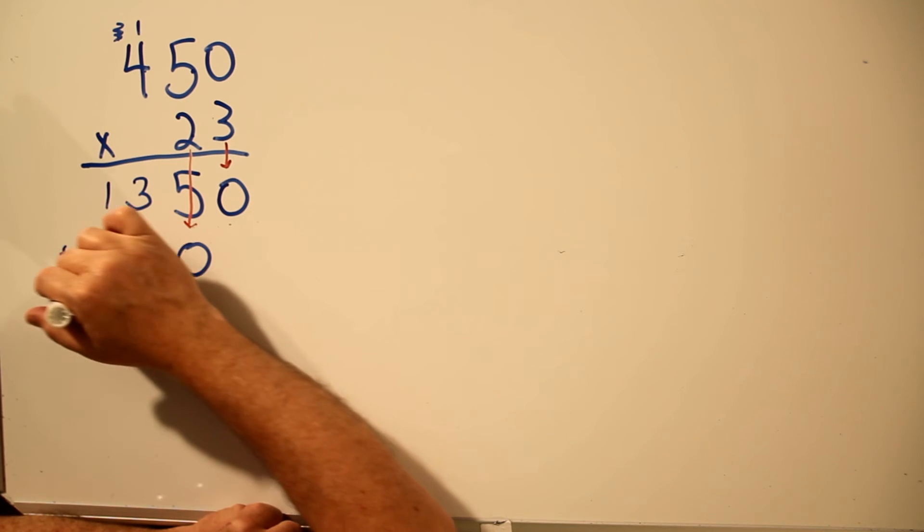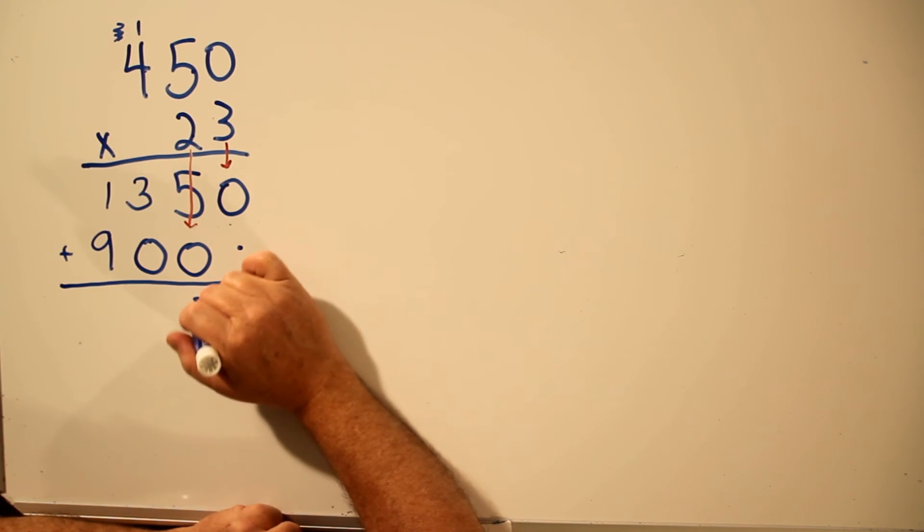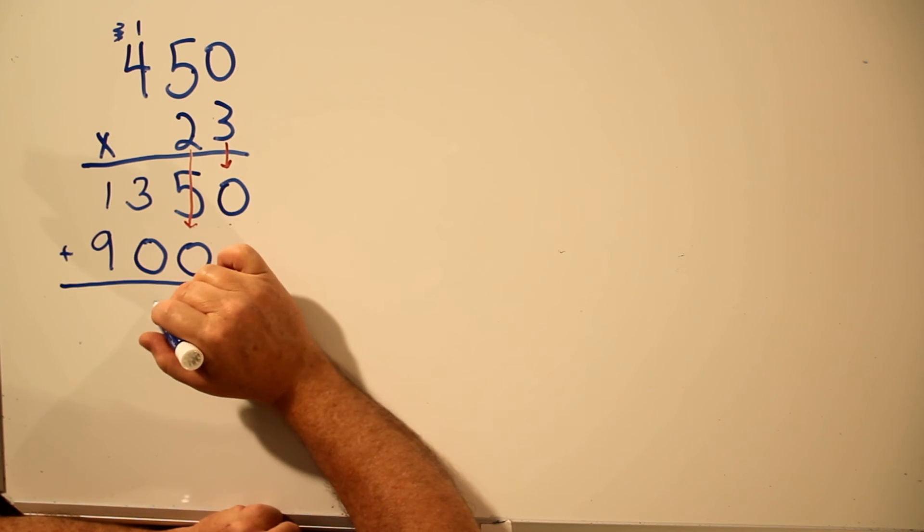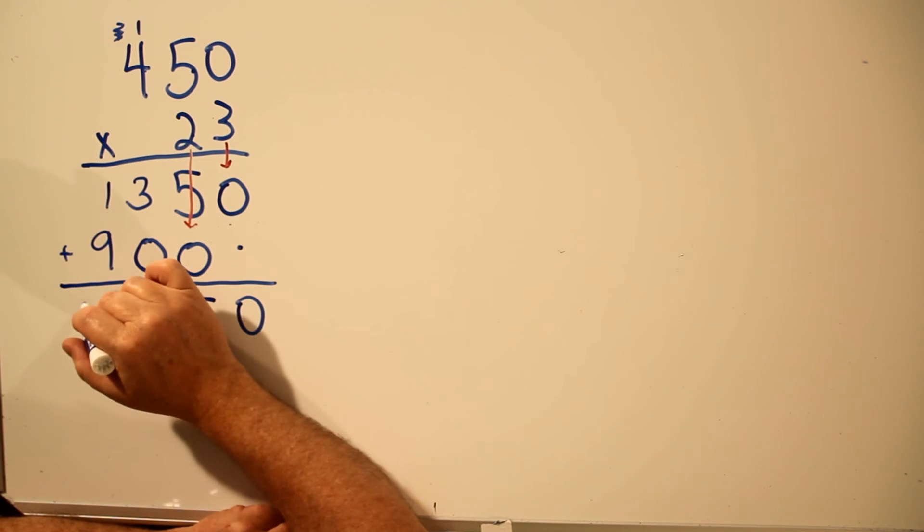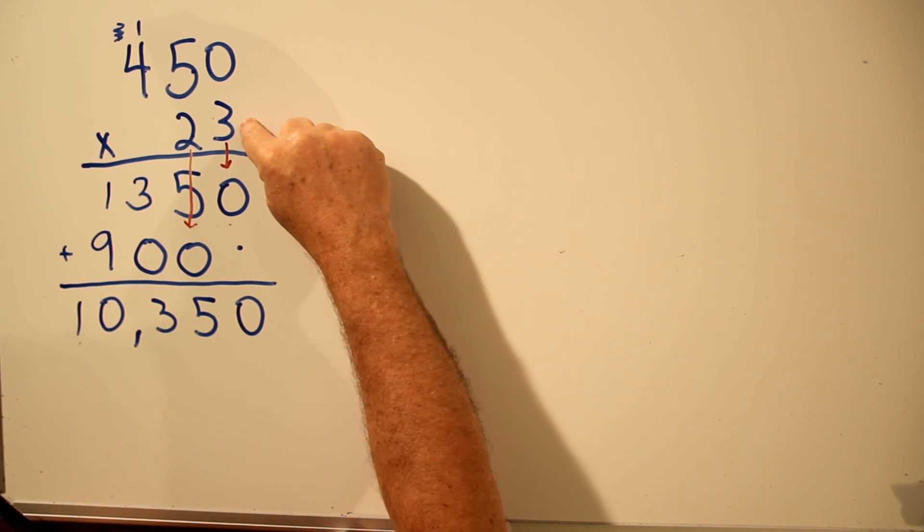Then we add up the two rows. 0 plus 0 is 0. 5 plus 0 is 5. 3 plus 0 is 3. 1 plus 9 is 10. 10,350. So that's the special technique that you can use when there's a zero in the bottom number.